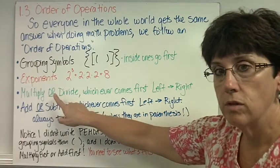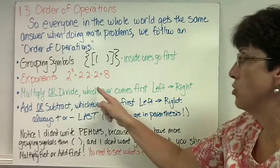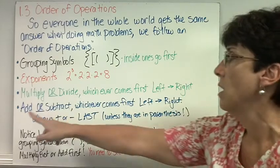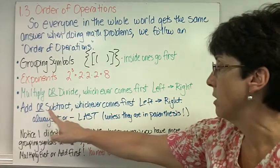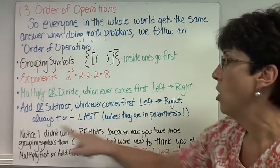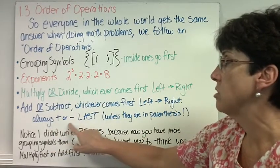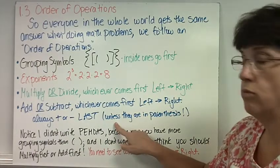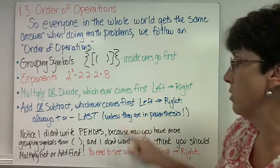Next, we multiply or divide whichever comes first reading the problem left to right. Then we add or subtract whichever comes first reading the problem left to right. Always add or subtract last, unless they're in parentheses.